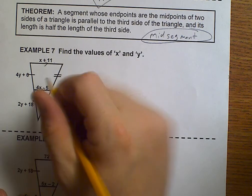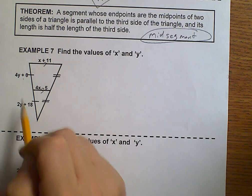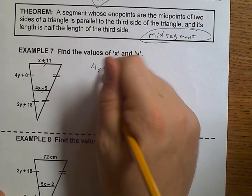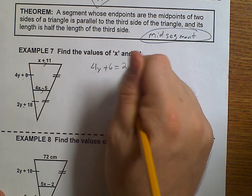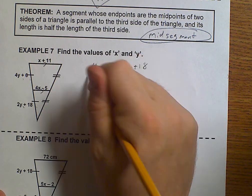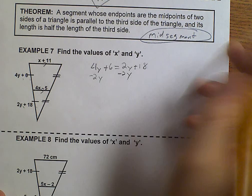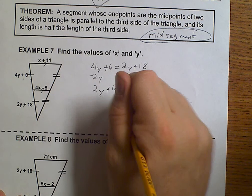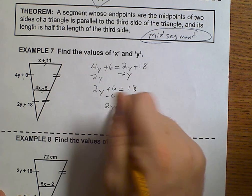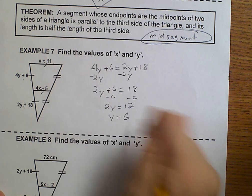And this is half the length of that. So first off, I know that these two must be equal. So I'm going to set 4Y plus 6 equal to 2Y plus 18. Let's subtract 2Y on both sides. 2Y plus 6 equals 18. 2Y equals 12. Y equals 6.